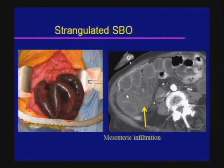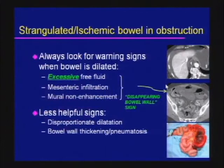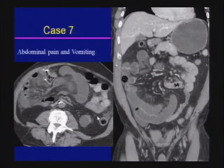The involved bowel loop shows poor enhancement relative to adjacent loops, and there is infiltration into the adjacent mesentery. Signs of strangulation include excessive free fluid — here seen around the liver — mesenteric infiltration, and the disappearing bowel wall sign. Bowel wall thickening and pneumatosis may also be seen, although these are less reliable. Pneumatosis can be seen in many benign causes.